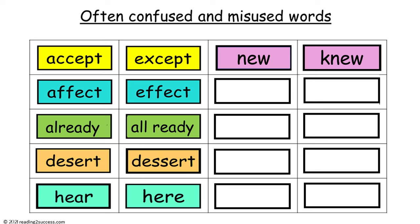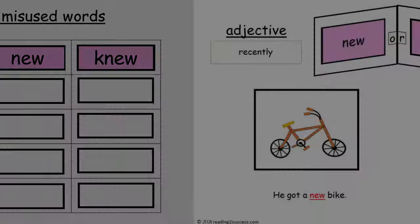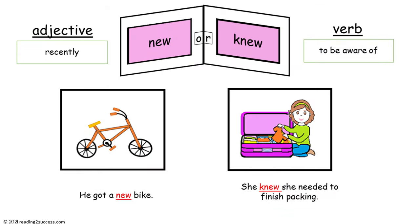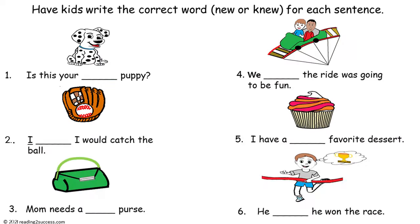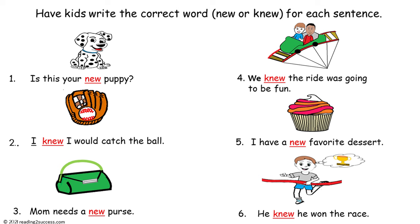Our sixth pair of often confused and misused words are new and knew. New, spelled N-E-W, is an adjective and it means recently, as in 'he got a new bike.' The second word, knew, spelled K-N-E-W, is a verb and it means to be aware of, as in 'she knew she needed to finish packing.' Now have kids write the correct word — new (N-E-W) or knew (K-N-E-W) — for each sentence.